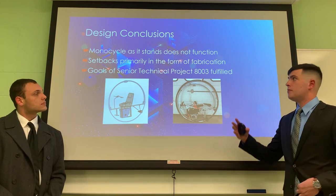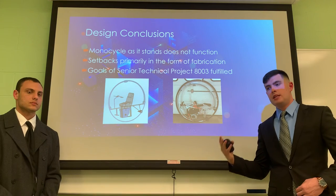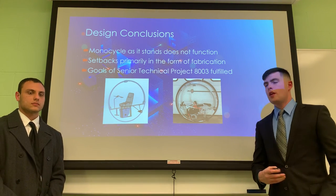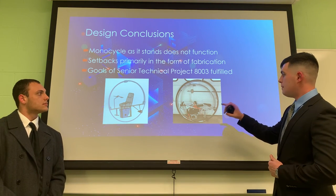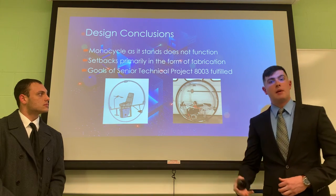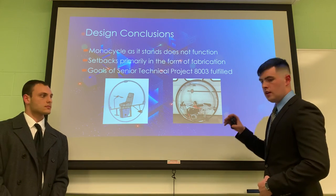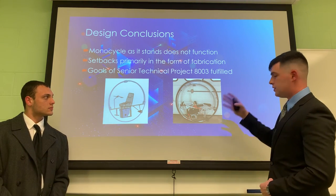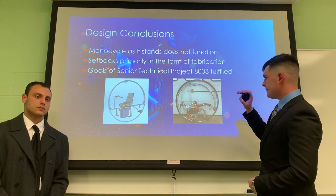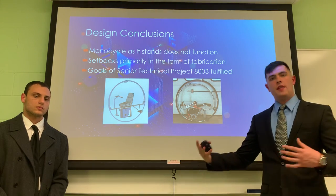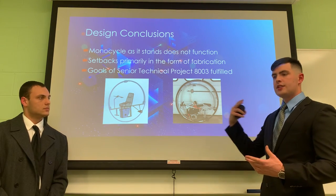Unfortunately, the monocycle as it stands right now does not function and does not meet the design criteria that we originally set forth. This is because of the means of manufacturing. When bending the outer wheel, we had to bend it by hand. We had to buy two 10-foot lengths of pipe — these two lengths had to be bent individually, one had to be cut to the size we needed, and then they had to be joined together. This process meant that it wasn't a perfect circle going around, and at certain points of the circle one of the rollers would actually disengage, causing the monocycle to lose structural integrity.